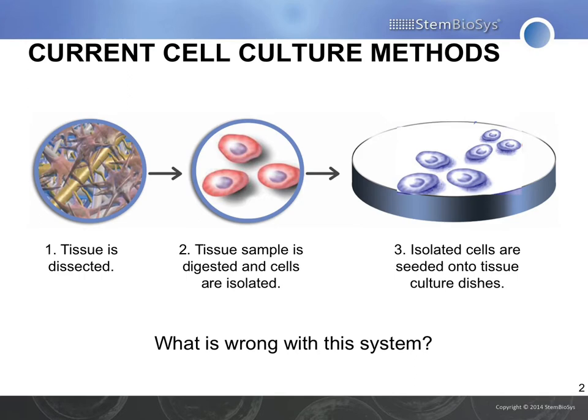Whether this is tissue culture plastic or a fibronectin, laminin, Matrigel-coated dish, it's really failing to recreate the complexity of the native niche. Our philosophy at STEM Biosys is that we can expect cells to respond just as strongly to signals that they should receive and don't, as to any signals that they do receive. So we can't expect to remove cells from a native niche, put them onto a very simple substrate, and retain their native phenotype. These cells are going to change, and there's going to be a lot of artifact of cell culture where the cells are responding to being placed into a bizarre environment rather than any experimental conditions you're hoping to test.